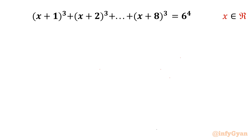Welcome back to Infigyan friends. Today in this video we are going to take up another challenging question from cubic equations. The given equation is (x+1)³ + (x+2)³ + ... + (x+8)³ = 6⁴, and we have to find out all real solutions.